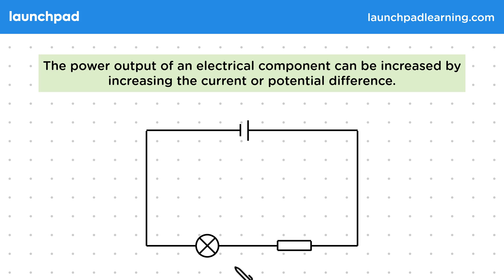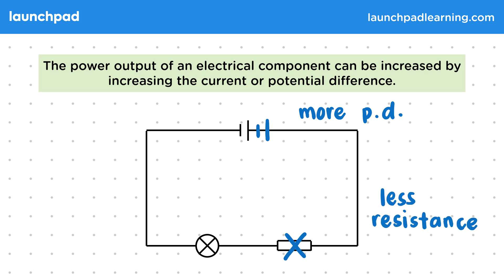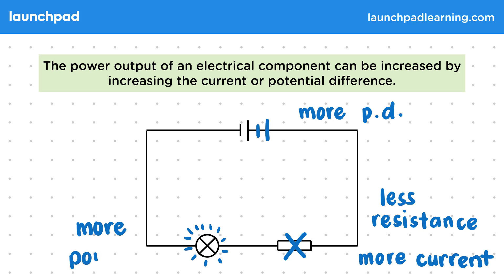We could increase brightness by adding a cell, which increases the power as there's more potential difference from the source given to the bulb. We could also remove a resistor, which increases the power by decreasing the total resistance and therefore increasing the current through the bulb. We still do want to use resistors to stop the current from becoming too high. The bulb is now brighter as there's more power, because power equals potential difference multiplied by current, and both have increased.